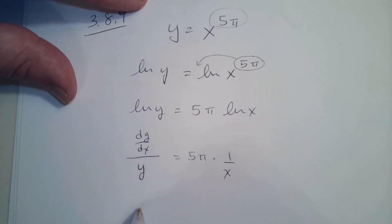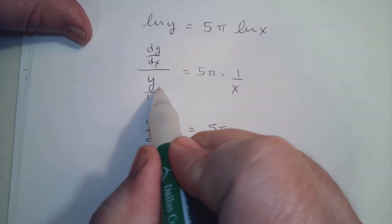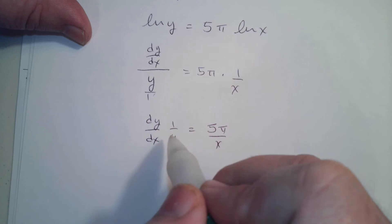Which is dy/dx over 1, so it's 1 over y equals 5π over x. I just took the bottom. Since it's a fraction over fraction, I took the bottom and flipped it.